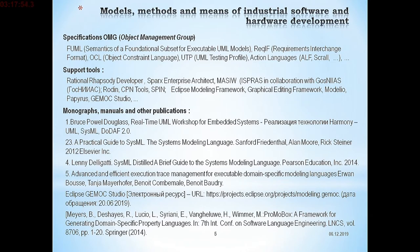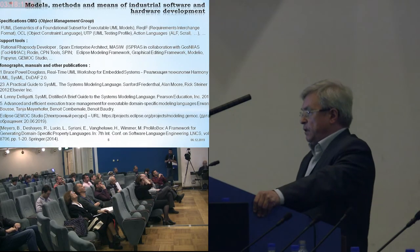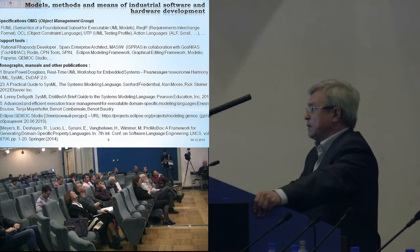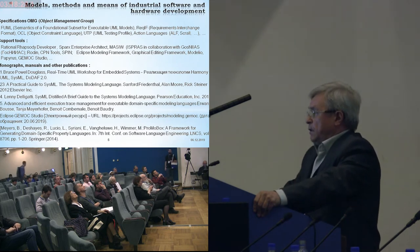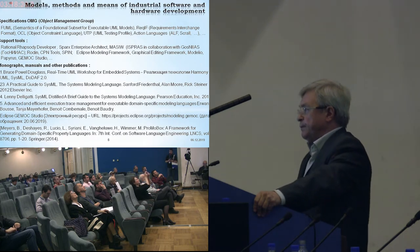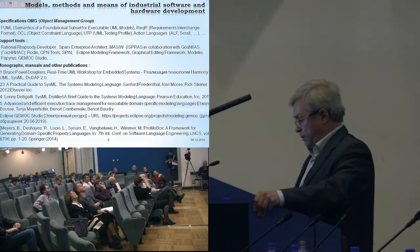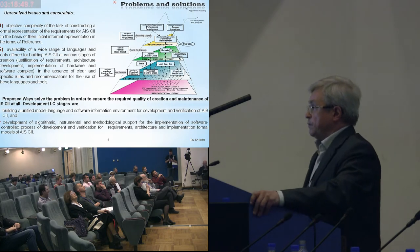We conducted a survey and research on what is happening in this area in the world, and analyzed existing models and means, studying a lot of scientific publications. I wanted to mention products like IBM Rational Rhapsody and Massif, and a number of products used in system programming like Rational Doors. Presently, we are using mostly open source products to verify the ideas we are trying to implement.